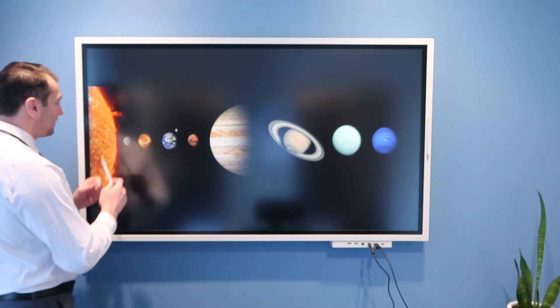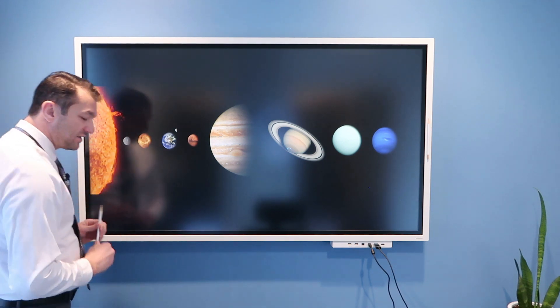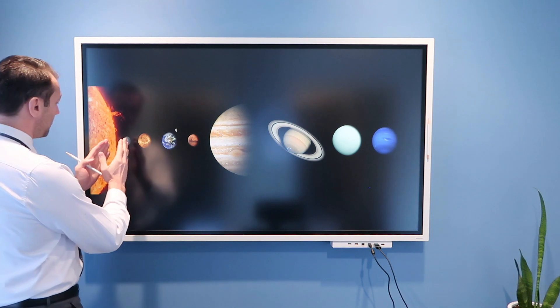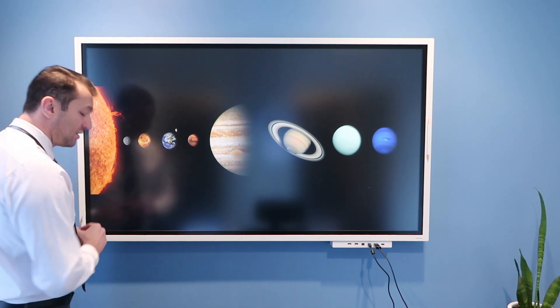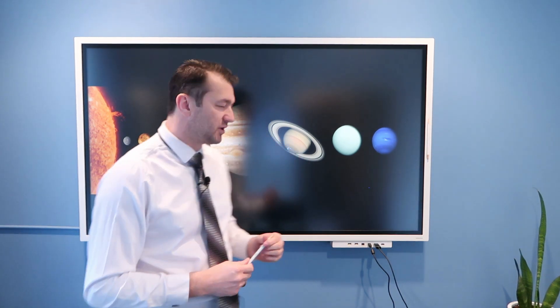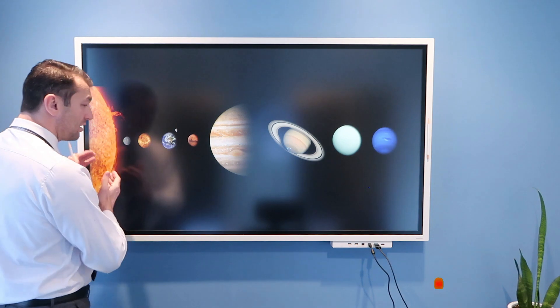If we start with Mercury, that's the closest planet to the Sun, and this planet does not have atmosphere. It is so hot on the surface of Mercury that is pointing towards the Sun that all gases are ejected into outer space. This planet is also rotating very slowly around its axis, so the day on Mercury lasts longer than the year on Mercury.